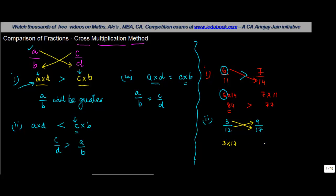3 into 17, 9 into 12. 3 into 17 gives you 51, 9 into 12 gives you 108. Obviously 108 is greater than 51 and 108 contains the numerator whose value is 9. 9 is in which fraction? It's in this fraction. Hence, one can easily conclude that 9 upon 17 is greater than 3 upon 12.